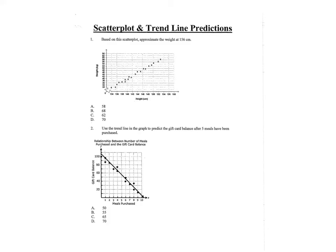Okay, scatterplot and trendline predictions. On these we're predicting what's going to come next on the scatterplot line or maybe we're filling in somewhere on the line. On number one, it says based on the scatterplot, approximate the weight of 156 centimeters.